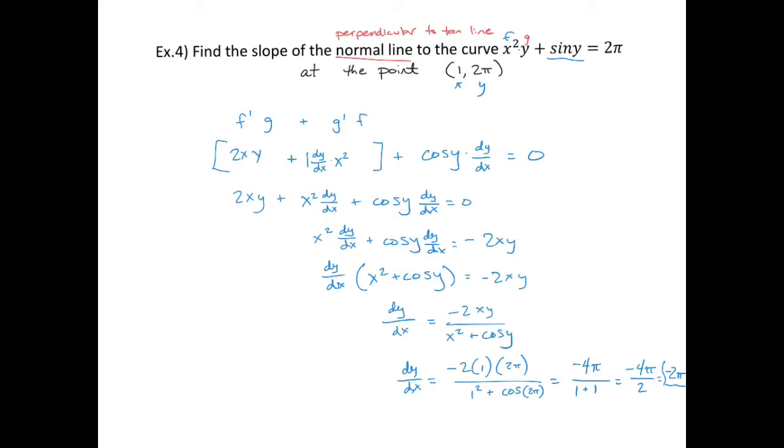Now I did want the normal line, so if the slope of my tangent line equals -2π, then the slope of my normal line is going to be the opposite reciprocal: positive 1/(2π).